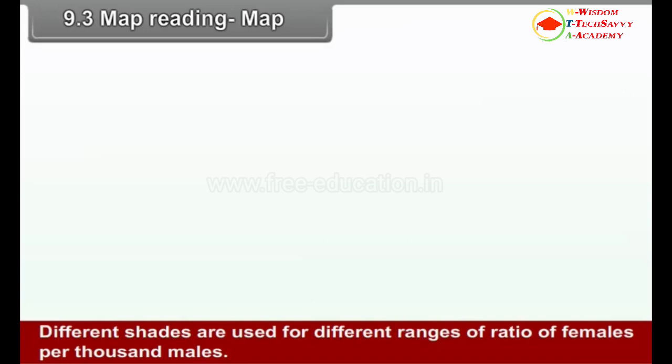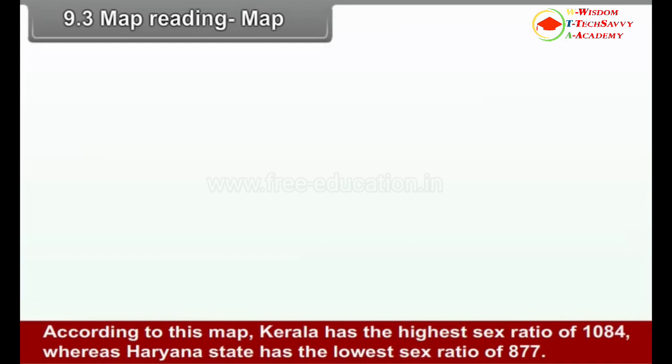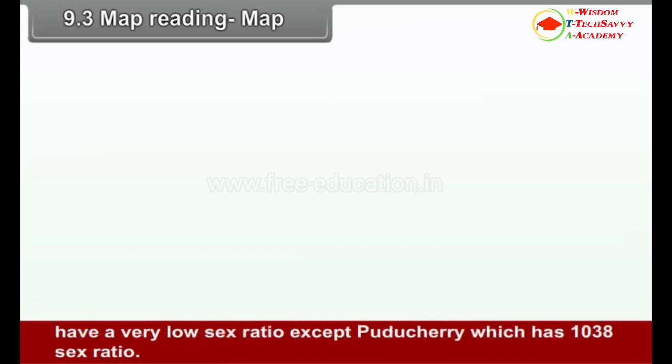Different shades are used for different ranges of ratio of females per thousand males. Besides shades of color, the actual sex ratio of each state is also given. According to this map, Kerala has the highest sex ratio of 1,084, whereas Haryana has the lowest sex ratio of 877. Union territories like Chandigarh, Delhi, Dadra, Nagar Haveli, Daman and Diu, etc. have a very low sex ratio, except Puducherry which has a sex ratio of 1,038.